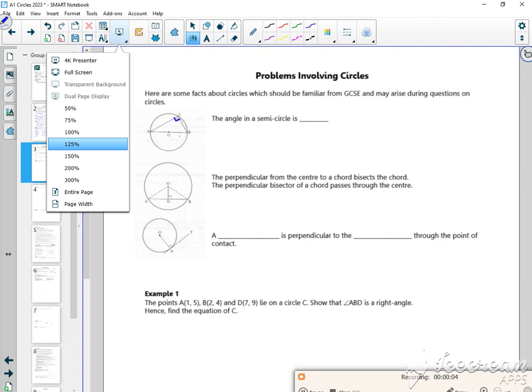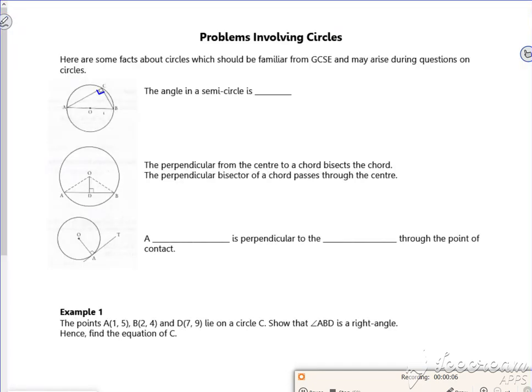So we're going to carry on with the videos. These are like GCSE circle theorems. We know that the angle in a semicircle, so if you're using the diameter, then you're going to create a right angle.